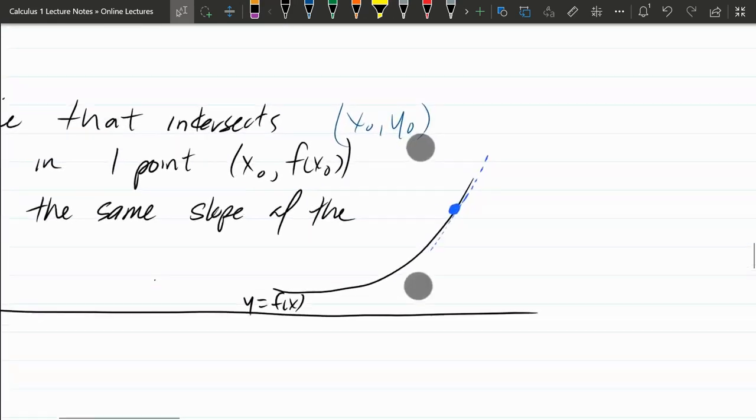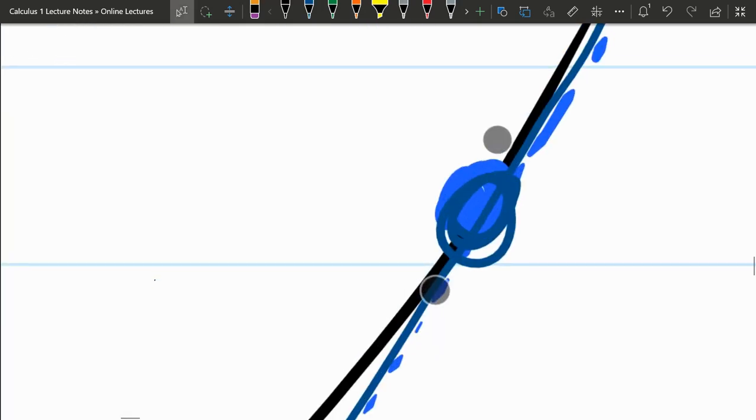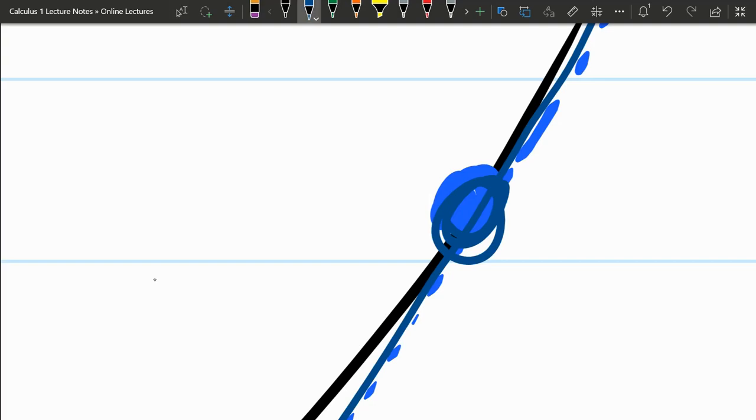So if I zoom in over here to see what's going on, we have a function, this black curve here. And the tangent line intersects in one point right here. If I zoom in, if I zoom in really far, the black curve appears more like a straight line. And you'll notice the slope of my tangent line is exactly the same as the slope of the black curve at this point.